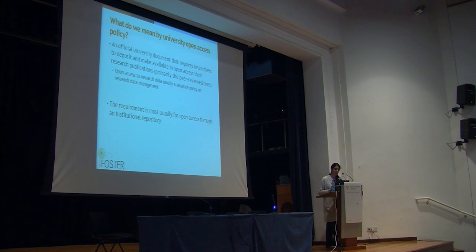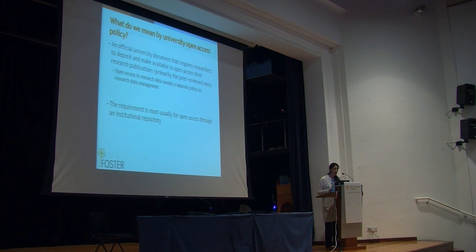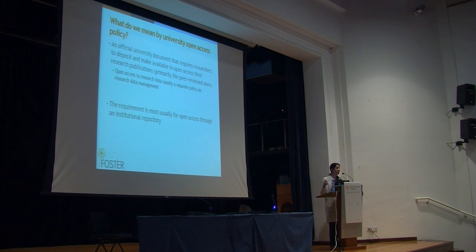So what is a university open access policy? This is an official university document. It has to do with the processes of the university — it could be the rector's paper or something that the Senate votes — which requires researchers to deposit and make available in open access their research publications. We mean primarily the peer-reviewed ones, because this is the research which has been accredited by the research community as high-quality research.